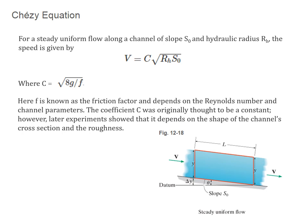There's two equations we're going to look at in this section. The first one is called the Chezy equation. For steady uniform flow along a channel of slope S0 and hydraulic radius RH, the speed is given by this following equation, where C is equal to the square root of 8g over F. F is what's known as the friction factor. It depends on the Reynolds number and channel parameters. The coefficient C was originally thought to be constant. However, later experiments show that it depends on the shape of the channel's cross-section and roughness. This diagram shows what we're looking at here. S is the slope as measured in reference to the base level.